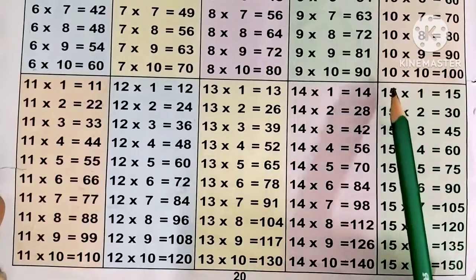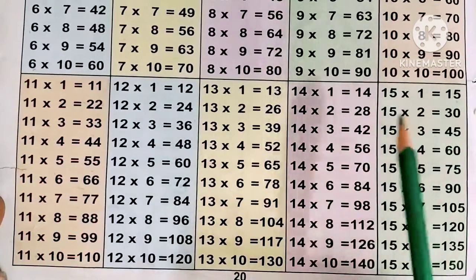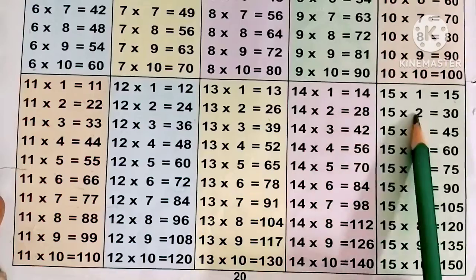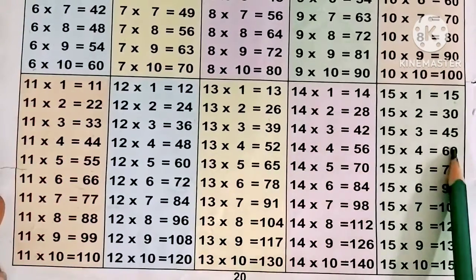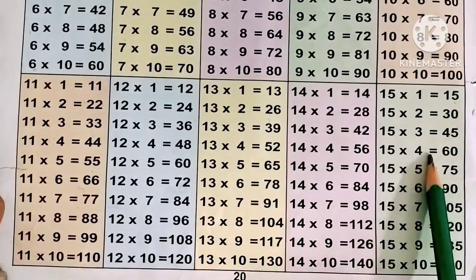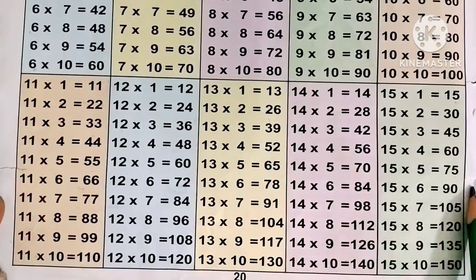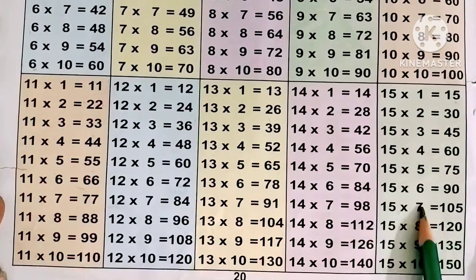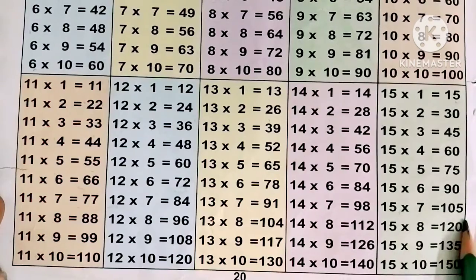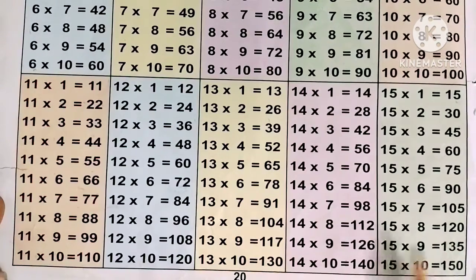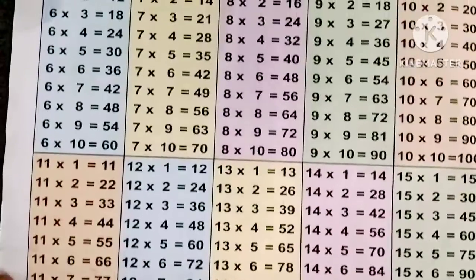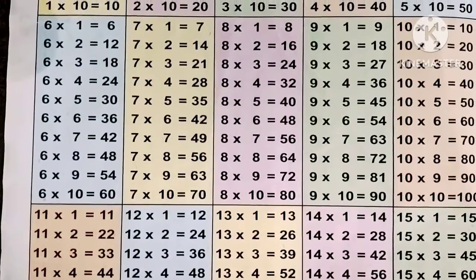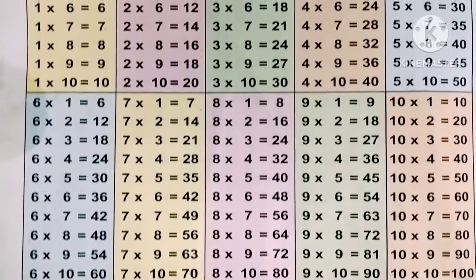Now the 15 times table. 15 ones are 15, 15 twos are 30, 15 threes are 45, 15 fours are 60, 15 fives are 75, 15 sixes are 90, 15 sevens are 105, 15 eights are 120, 15 nines are 135, 15 tens are 150. I hope you liked my video.